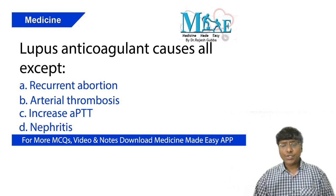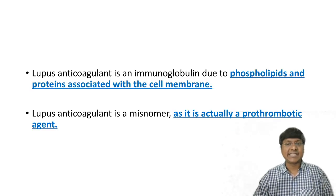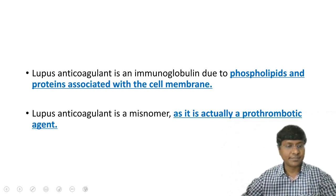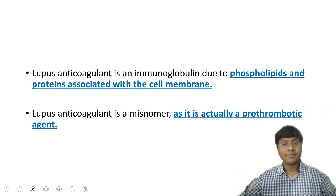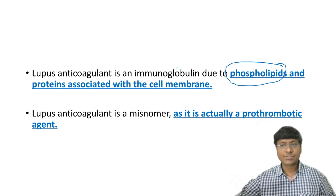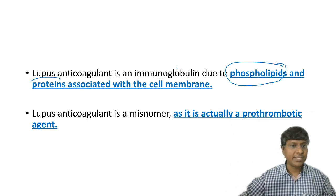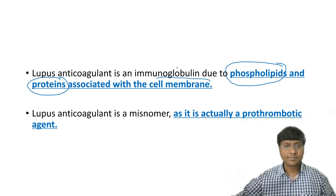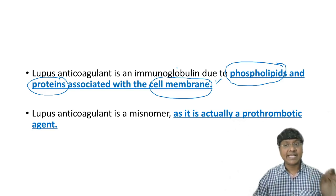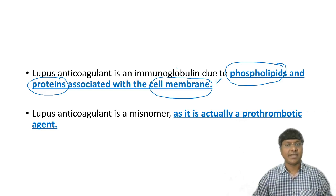You should know what exactly lupus anticoagulant is. Lupus anticoagulant is actually an antibody — it is an immunoglobulin. This particular immunoglobulin is due to the presence of phospholipids and proteins which are present within the cell membrane.